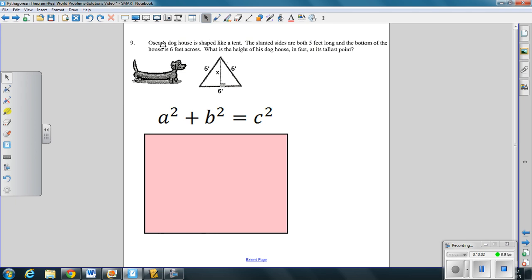Number 9. Oscar's doghouse is shaped like a tent. The slanted sides are both 5 feet long and the bottom is 6 feet across. What is the height of the doghouse in feet at the tallest point? So we're trying to look for this. We're trying to look for the tallest part which would be right down here in the center. You need to remember something. Number 6 represents the distance from left to right. And if I'm looking at this triangle here, I only want this part of the bottom which is only half. So it's 3 here and 3 here. So how do I set this up?